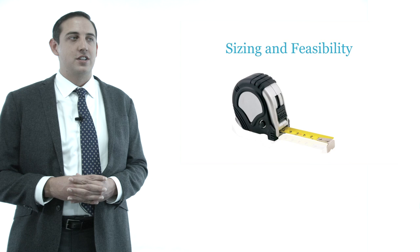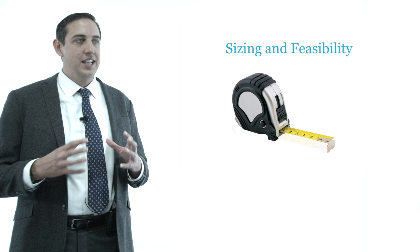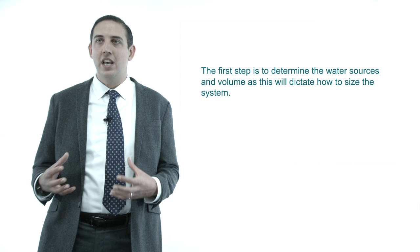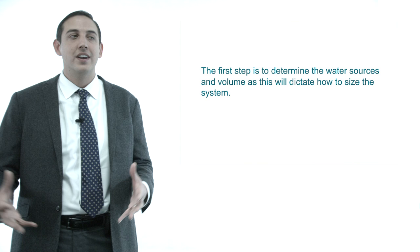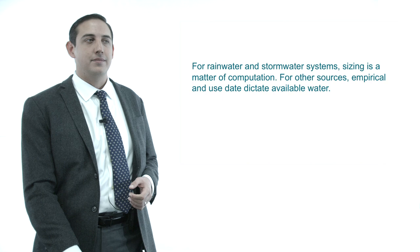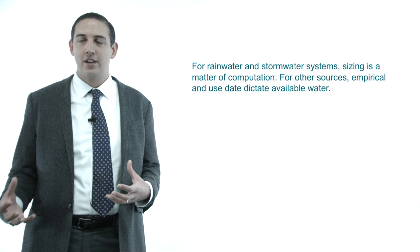What we're going to focus on in the rest of this session is really the sizing and then the feasibility of these systems. Just because you can do a rain water harvesting or storm water harvesting system doesn't mean you always should — feasibility certainly needs to be looked at. The first step in designing a system is understanding what your water sources are going to be, whether it's storm water, rain water, or gray water. And then also, what you're going to be using the water for. For rain and storm water, sizing is a matter of computation. For all other sources, it's based on empirical data.